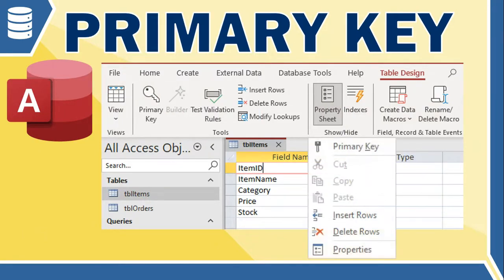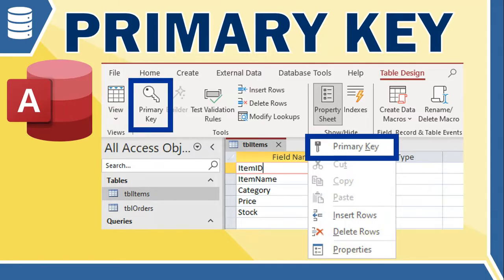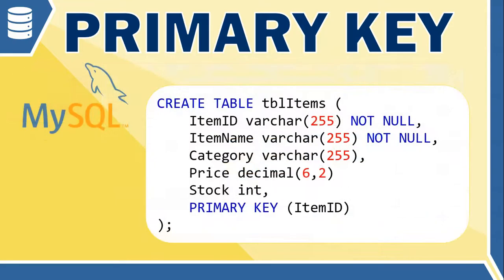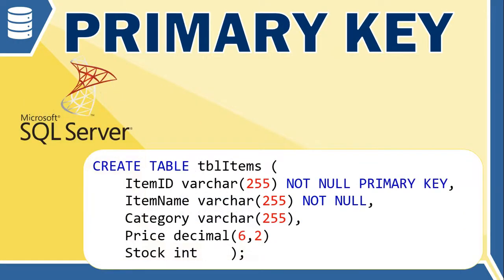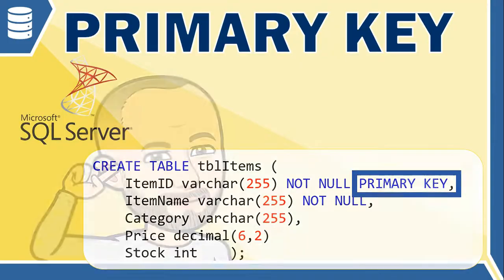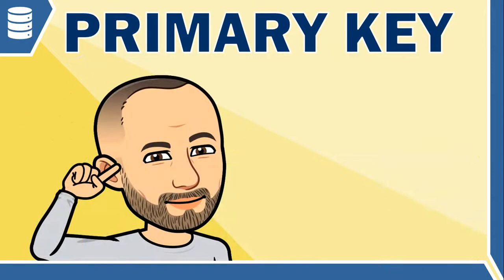Making a field into a primary key is simple. In Microsoft Access, for example, you simply right-click on the selected field and choose the primary key option, or select a field and find the primary key button on the table design toolbar. When using SQL code to create or alter a table, you simply use the PRIMARY KEY keyword in your statement — as in this example of MySQL and Microsoft SQL Server.